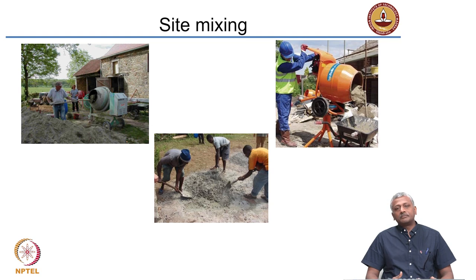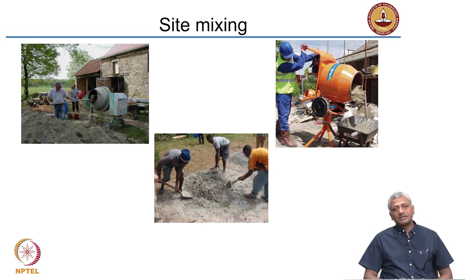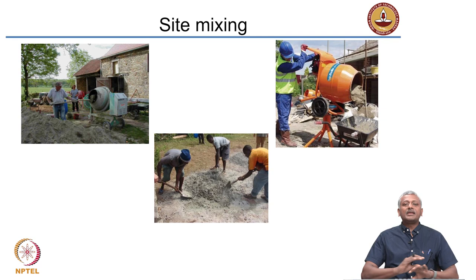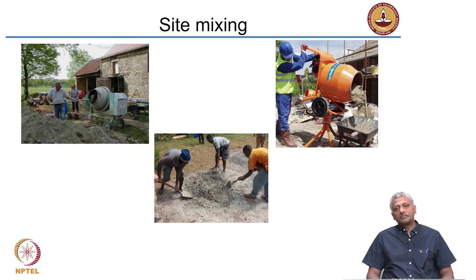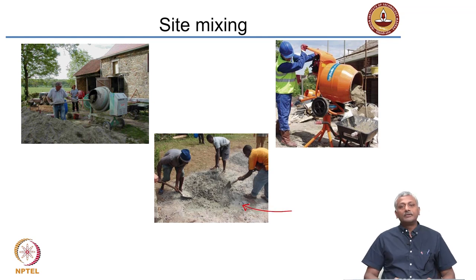The next aspect is mixing. You have batched the ingredients, whether by volume or by weight, and then you need to mix it. If you go to construction sites in India or abroad, in many instances you will find that the kind of mixing that people do varies significantly. This is a common sight in locations where there is absolutely no control on the quality of the material.